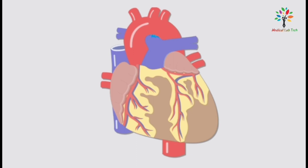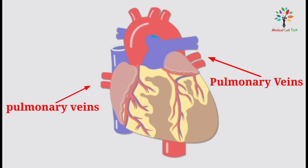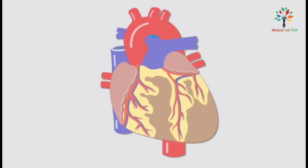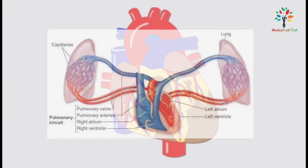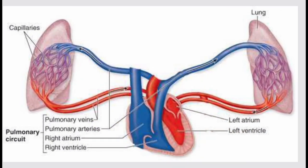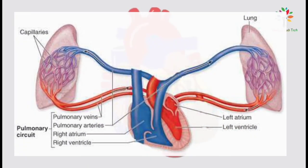Next, I am going to talk about the pulmonary veins. Two pulmonary veins from the right lung and another two pulmonary veins from the left lung carry oxygenated blood to the left atrium of the heart.